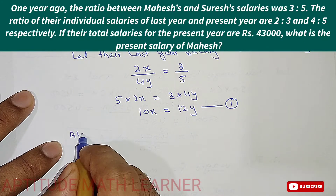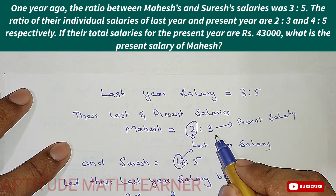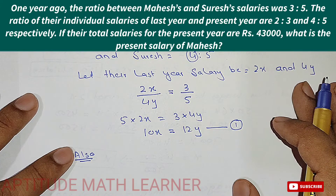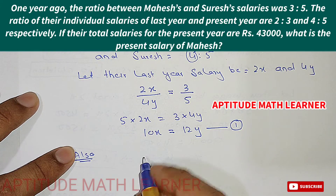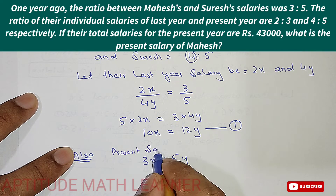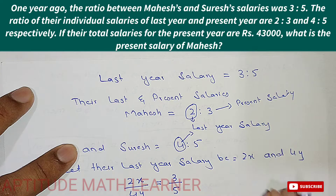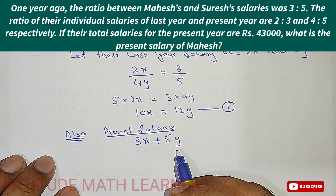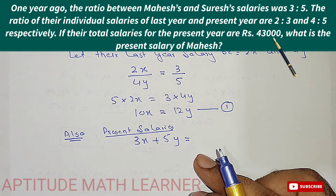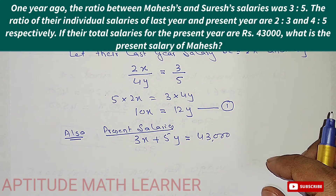Now for the present salaries: for Mahesh we have 3x and for Suresh we have 5y. So the total present salary is 3x + 5y. This present year total salary equals 43,000. This is Equation 2.